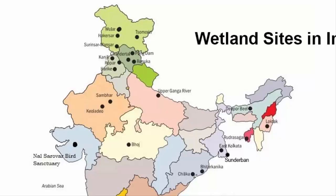In Assam, you will find a wetland in Deepor Beel. In Manipur, Loktak Lake. In Tripura, Rudra Sagar Lake. In West Bengal, we have East Kolkata Wetlands and the Sundarbans Wetland. In Odisha, we have Bhitarkanika Mangroves and Chilika Lake.